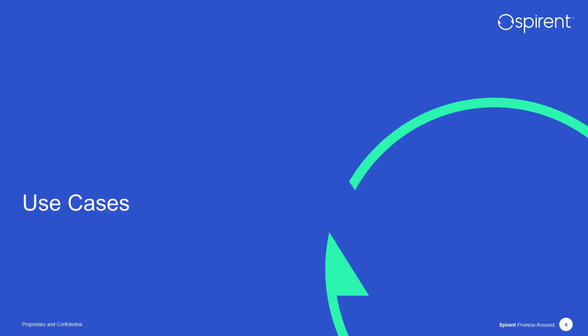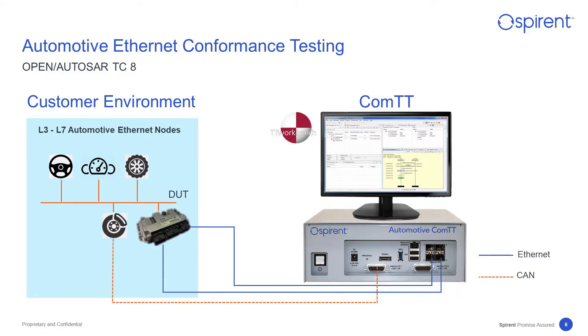Let's take a look at the use cases. First, let's explore the conformance test solutions, which are available on TT Workbench running on COMTT. They are used to test layer 3 to layer 7 automotive Ethernet communication.